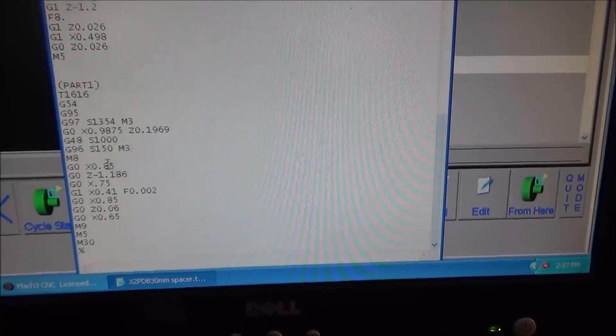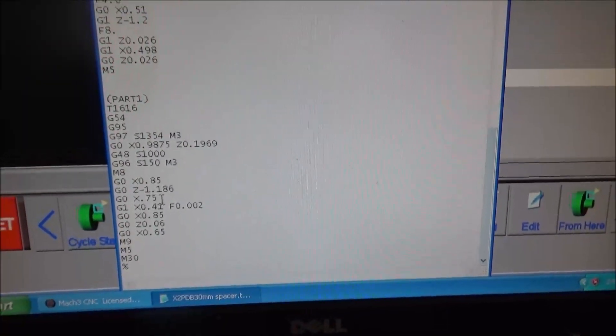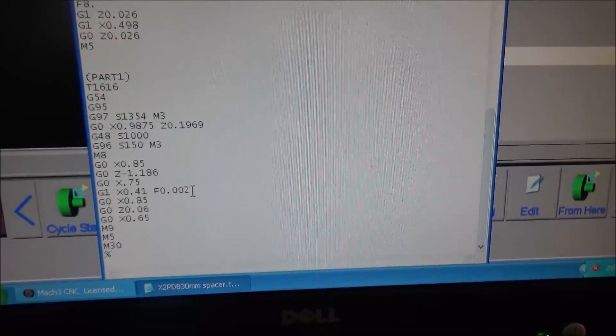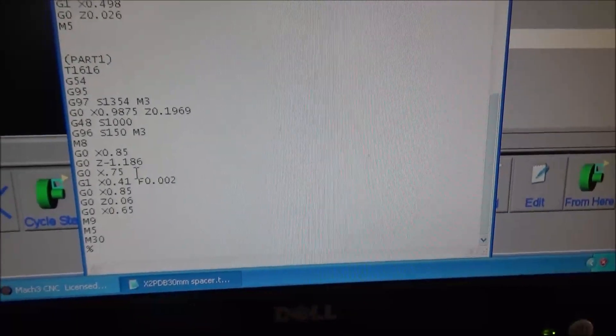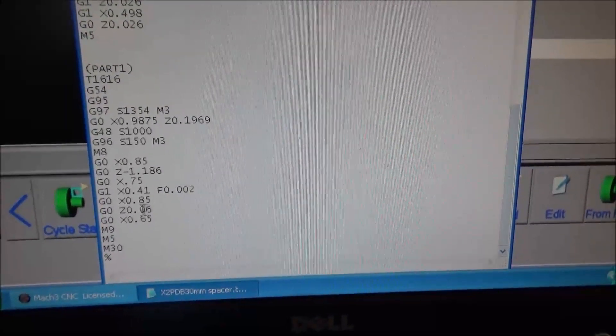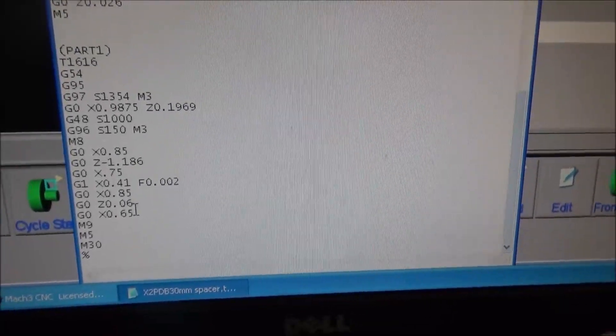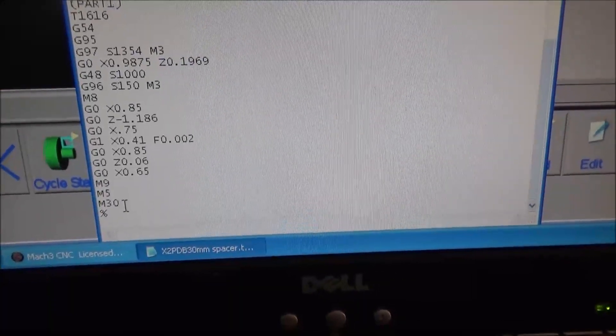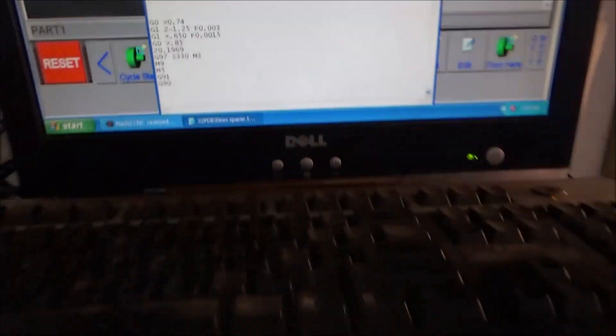The parting operations, we're going to do our tool change, move over to 1.186 at X.75. Then we're going to go into .41 at a feed rate of .002. Now this is constant surface speed, G95. Then we're going to back out, .85, move back over to a position of Z.06. And then that will allow me to move my stock out and get it in position for the next piece.